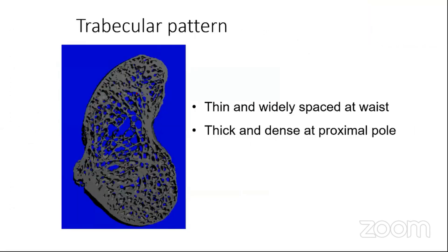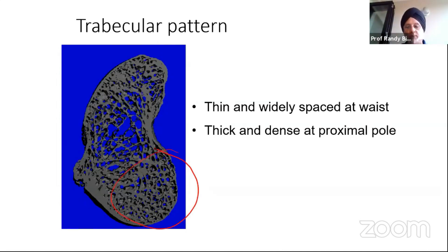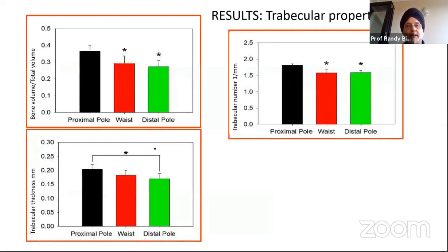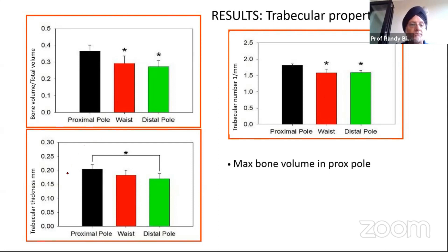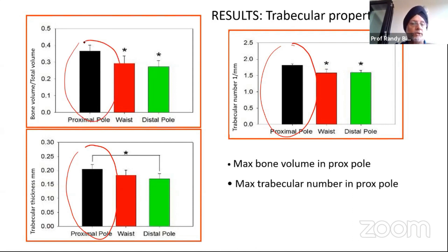When we did the micro CT, what we found was the proximal pole has the most dense trabeculae — really thick trabeculae. So it has the best bone in the scaphoid. If you look at the number of trabeculae, the bone volume, trabecular thickness, and inter-trabecular distance, you realize that the proximal pole has the best bone — meaning good screw purchase.